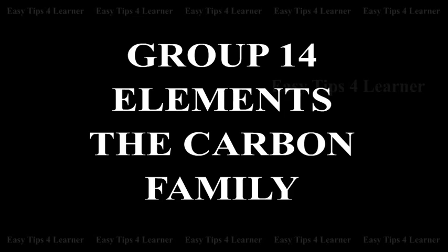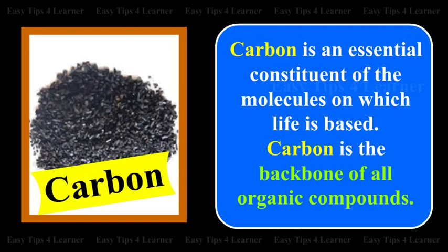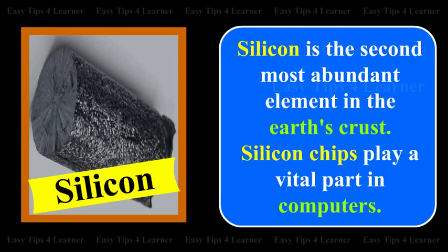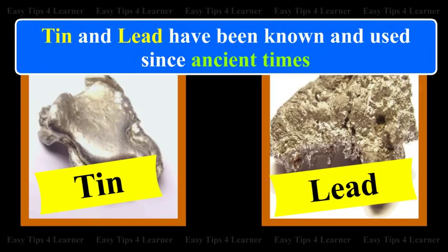Group 14 Elements: The Carbon Family. The Group 14 (4A) elements are Carbon, Silicon, Germanium, Tin, and Lead — especially important both in industry and in living organisms. Carbon is an essential constituent of the molecules on which life is based and is the backbone of all organic compounds. Silicon is the second most abundant element in the earth's crust, and silicon chips play a vital role in computers. Both Silicon and Germanium are used in making modern solid-state electronic devices. Tin and Lead have been known and used since ancient times.